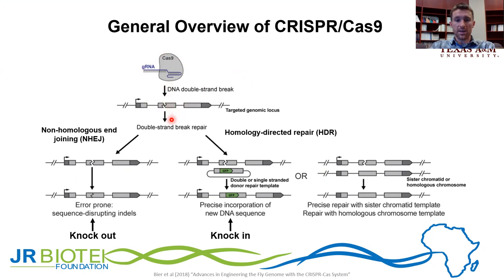This double-stranded DNA break is then repaired by one of two different innate cellular repair mechanisms. The first mechanism is non-homologous end joining. This is a very error-prone repair mechanism, which often results in the insertion or deletion of different nucleotides within the break site. These are called indels. Indels can then cause frameshift mutations and ultimately the loss of function of this gene. When this occurs, this is called a knockout.